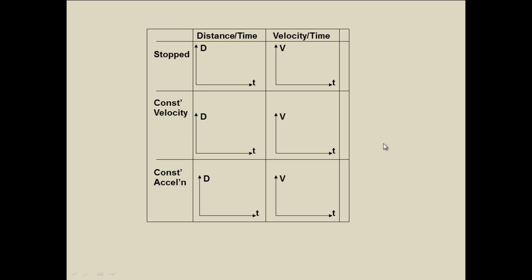Comparing distance-time and velocity-time graphs: For an object that is stopped, distance-time shows a flat line running straight across. Constant velocity is a straight line with a gradient going upwards. Constant acceleration is an upward curve. For velocity-time, stopped is a line along the x-axis, constant velocity is a flat line above the x-axis, and constant acceleration is a line with a gradient going upwards.